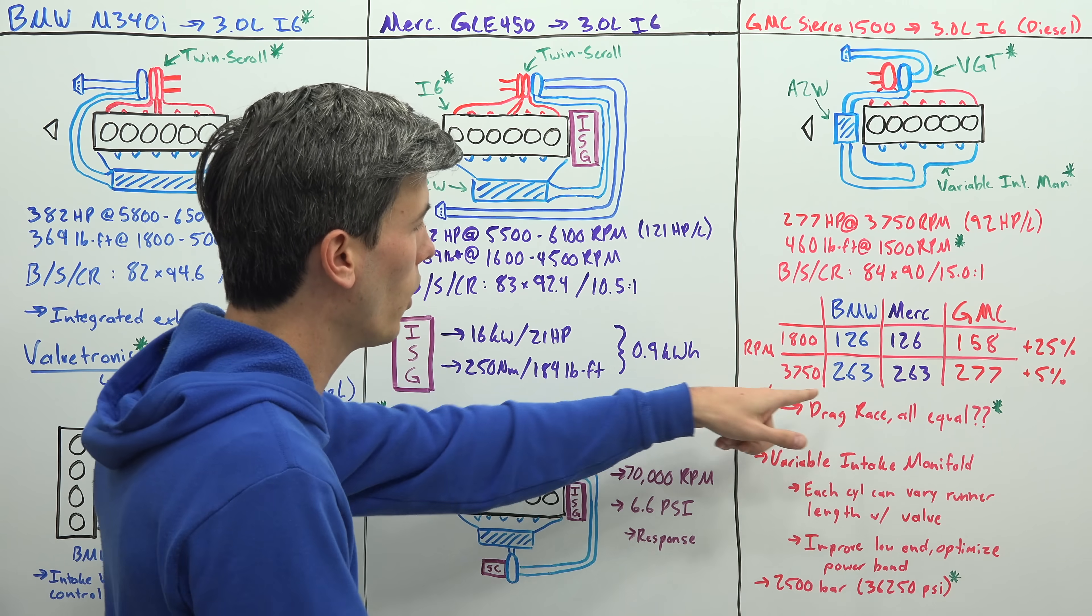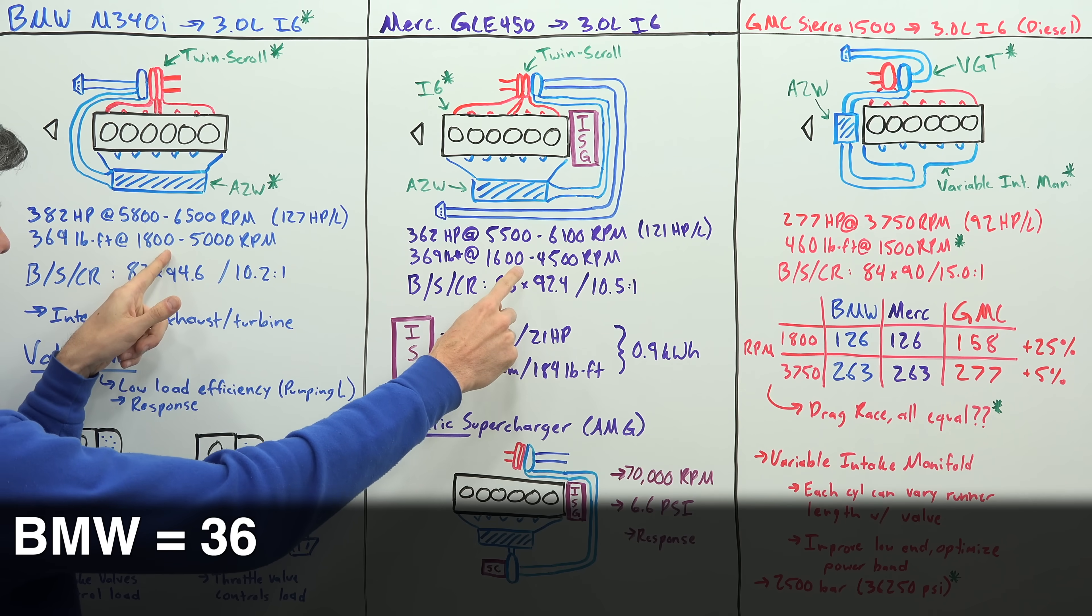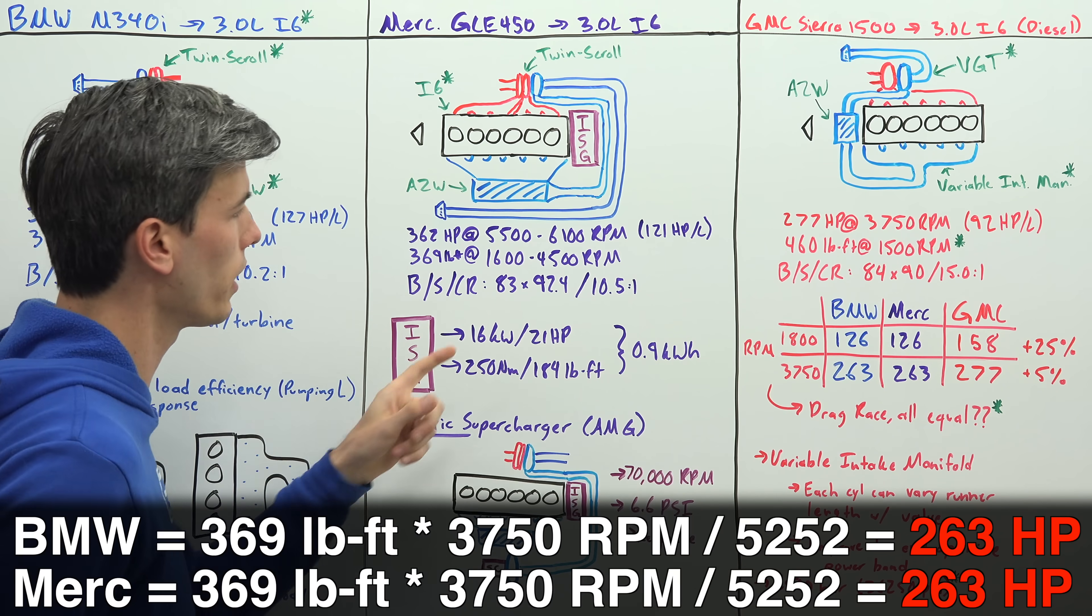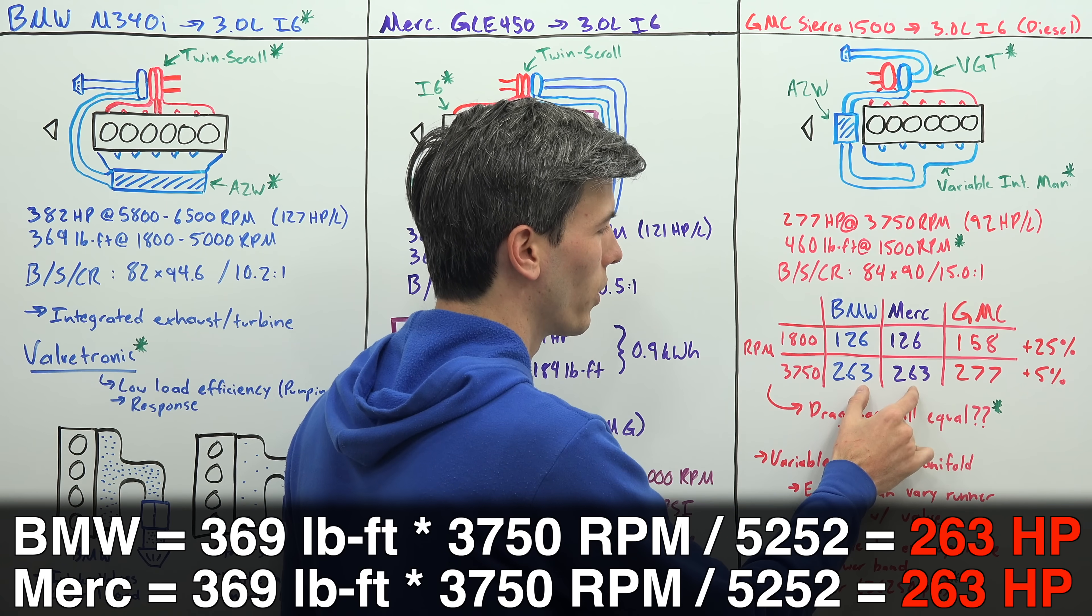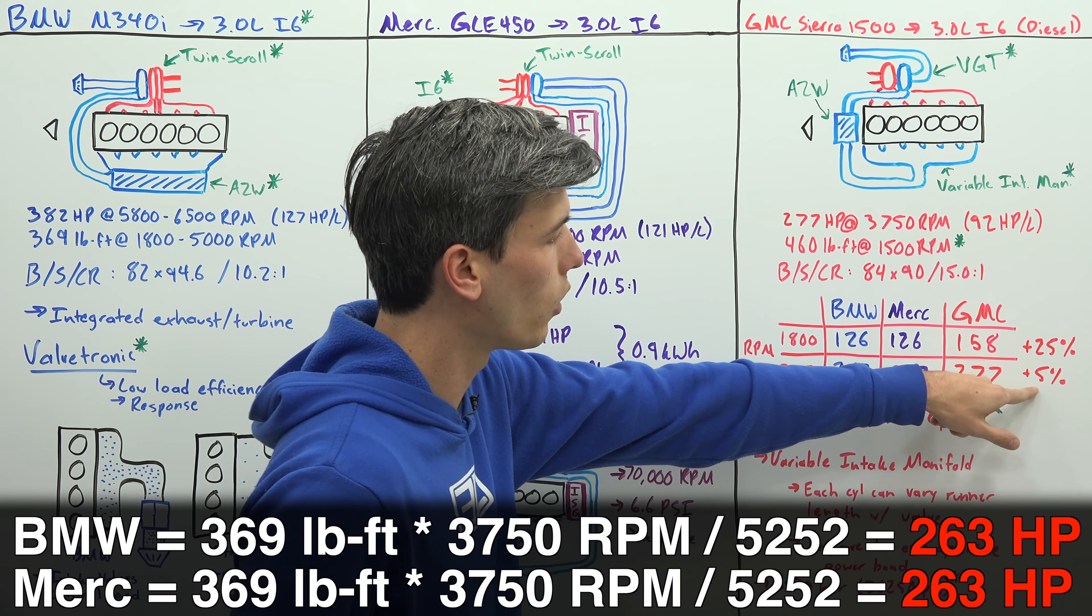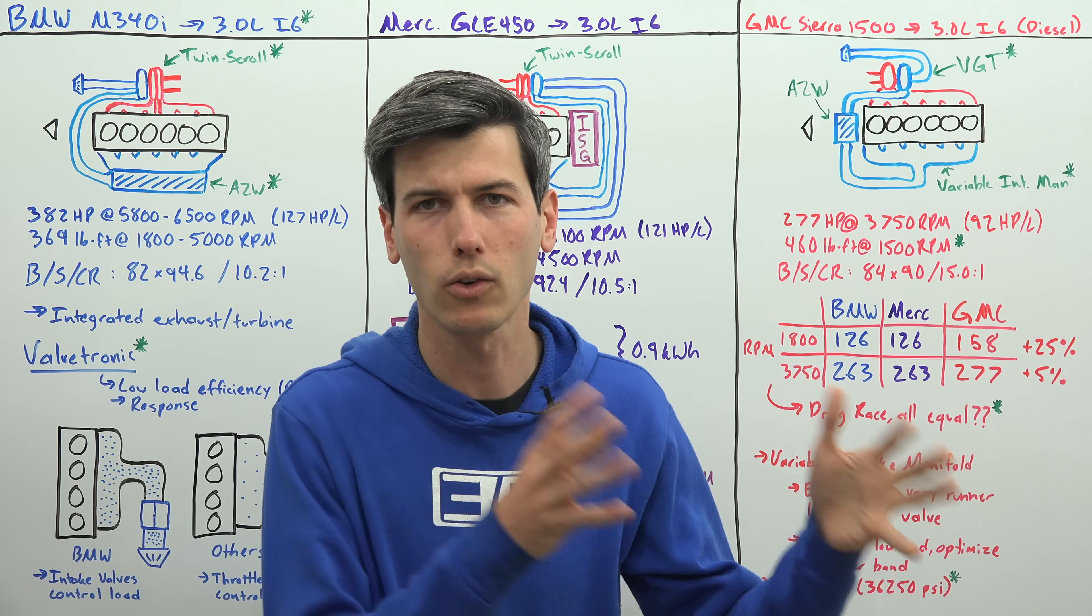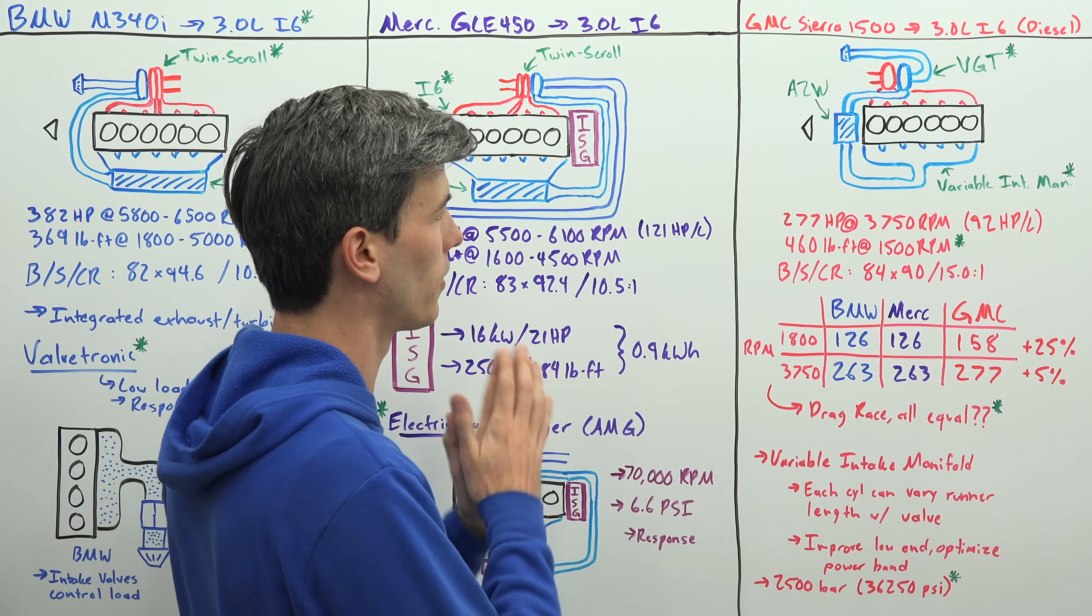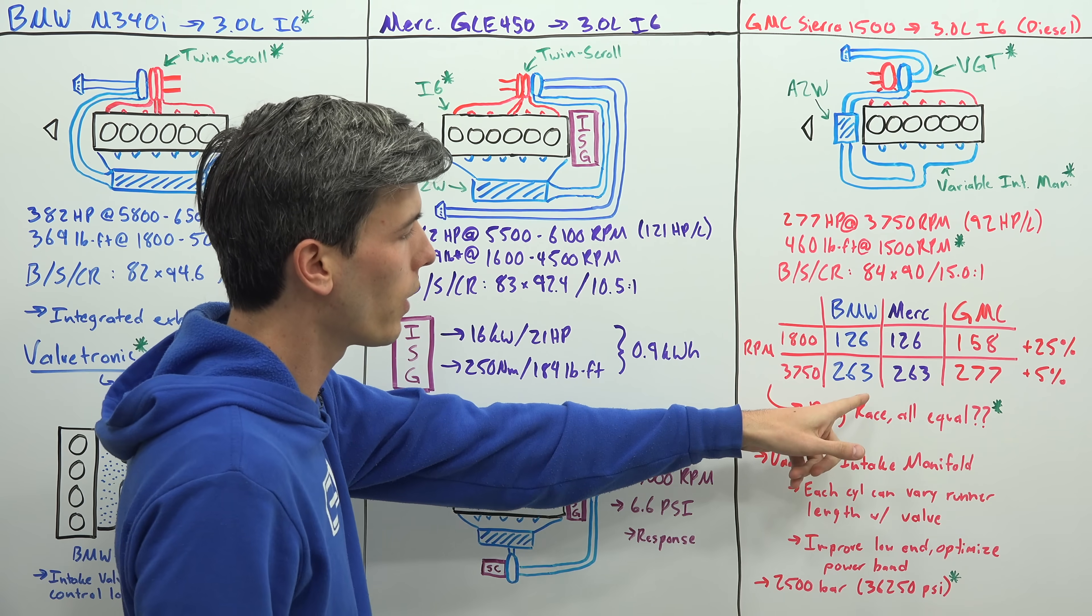We know the BMW and Mercedes torque at that because it falls within their torque band between 1800 and 5000 here, 1600 and 4500 here. Both of them are hitting peak torque which means they're both making 263 horsepower. So the GMC now only a 5% advantage. If you were to have a drag race with three vehicles that all weighed the exact same amount and had the same aerodynamics, everything about them is the same except they have different engines for each of these, the BMW engine would be the slowest initially because it takes the longest to get to its peak torque.